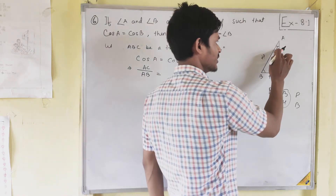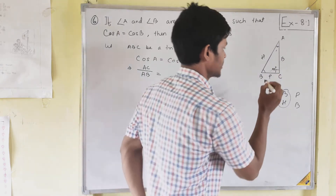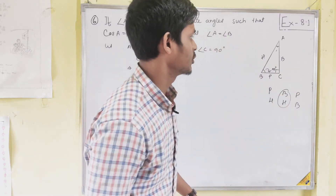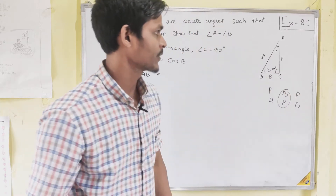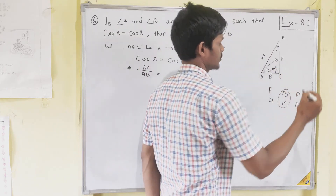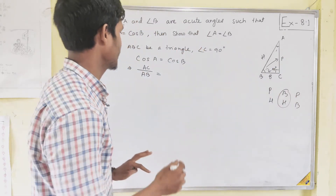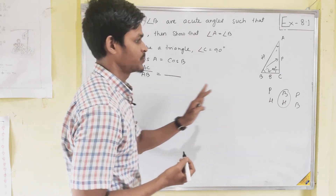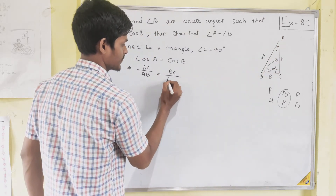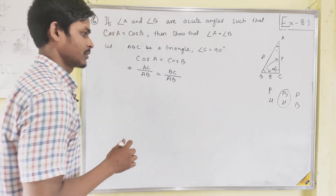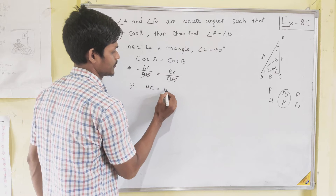Now if theta is angle B, the base changes. For cos B, base by hypotenuse gives BC by AB. Now since cos A equals cos B, we have AC/AB equals BC/AB. Simply cancel AB from both sides, giving AC equals BC.